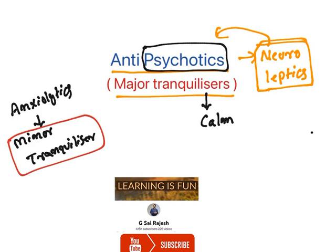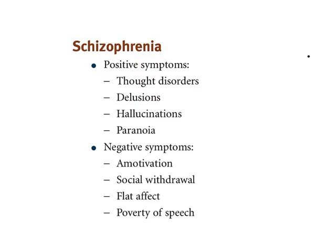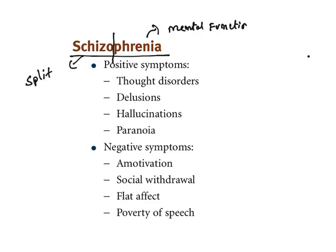The major psychological disorder is known as schizophrenia. 'Schism' means split and 'phrenia' means mental function, so there is a split in mental function — hence this disorder is known as schizophrenia. It has two kinds of symptoms: positive symptoms and negative symptoms. Schizophrenia is basically a thought disorder.